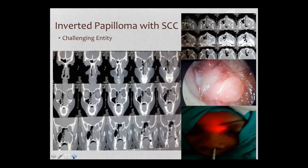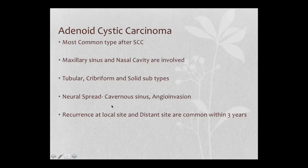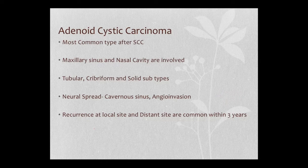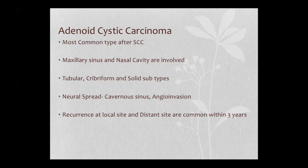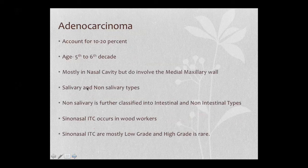Adenoid cystic carcinoma is the most common type after squamous cell carcinoma in maxillary sinus and nasal cavity. It has three sub-histologies: tubular, cribriform, and solid. Perineural spread to the inferior orbital nerve and cavernous sinus is very common. Cavernous sinus involvement must be ruled out in adenoid cystic carcinoma — within two to three months the tumor may involve it. Local and distant recurrence within three years is common.